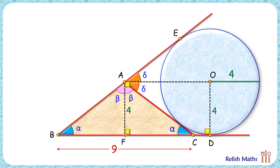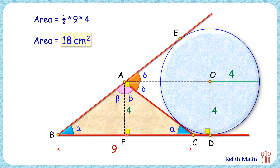The area of triangle ABC is half of base into height, so the area is half of 9 times 4. Solving it, we get the area as 18 centimeters square, and that's our answer. I hope you enjoyed the solution. I will see you in the next video — till then, tata bye bye.